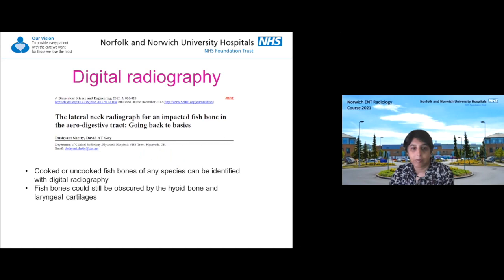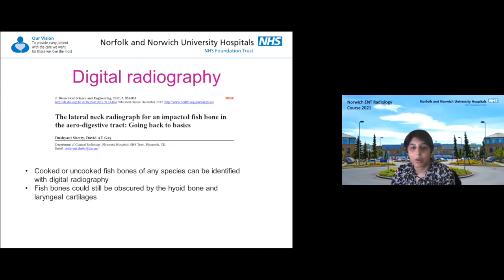Interestingly, deep sea water fish that swim deeper have reduced ossification of their bones, whereas cod which swims in more surface water has more ossified bones - so cod is still slightly easier to see. The difficulty is that fish bones could be obscured by the hyoid bone or ossified cartilages, and potentially by any soft tissue oedema on the film.